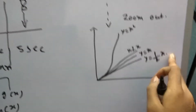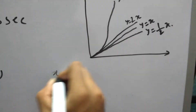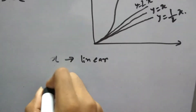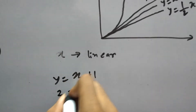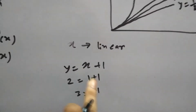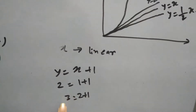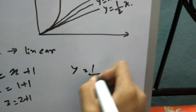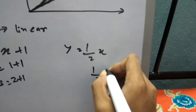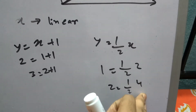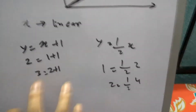Those three graphs show linear characteristics — with each value of x, y increases linearly. For example, y = x + 1: if x is 1, y is 2; if x is 2, y is 3. The value of y is always one more than x — that's linear behavior. Similarly for y = 1/2x: if x is 2, y is 1; if x is 4, y is 2. There's a constant multiplier, but we still see a linear trend in both cases.